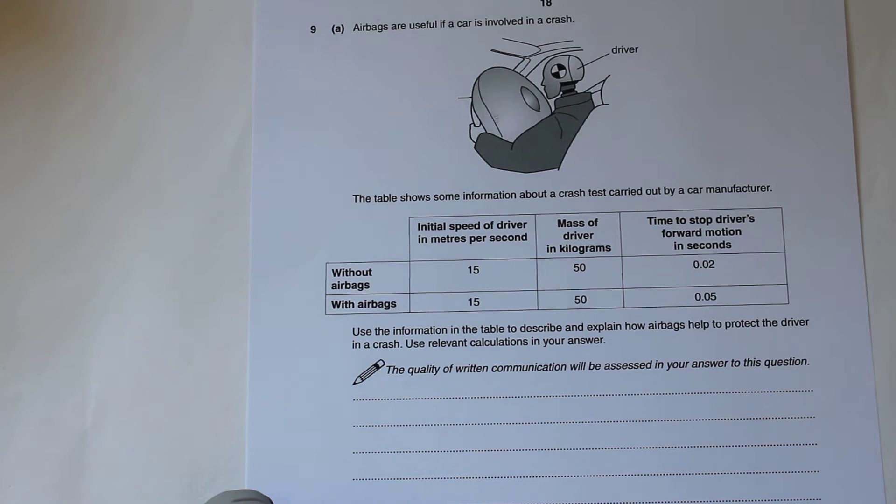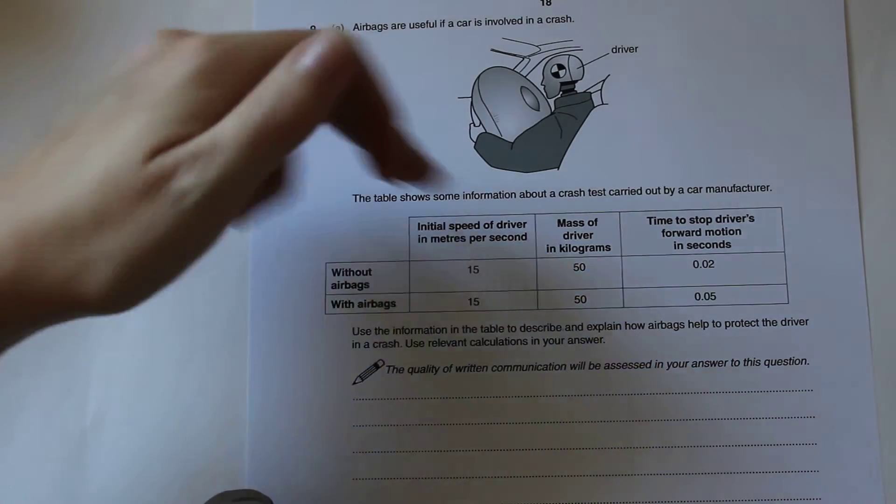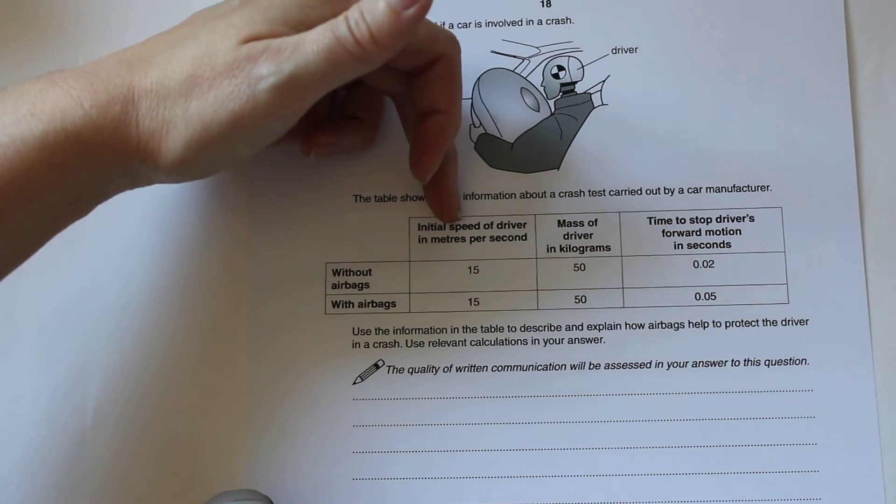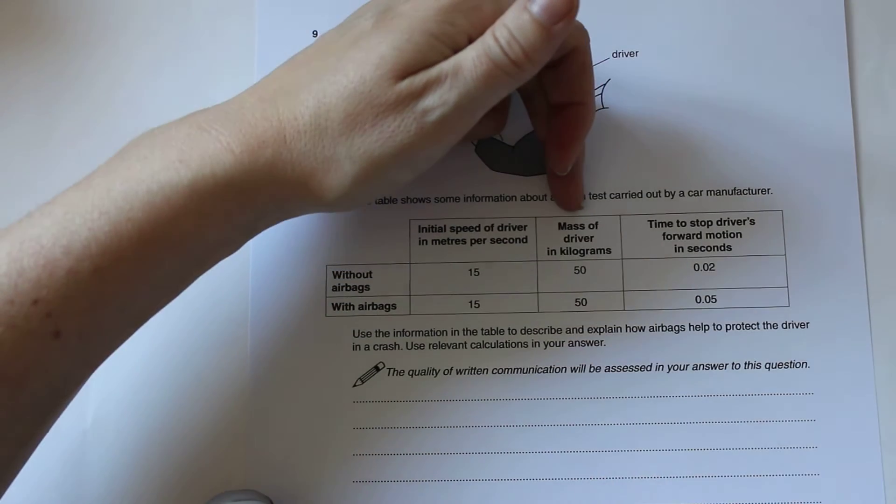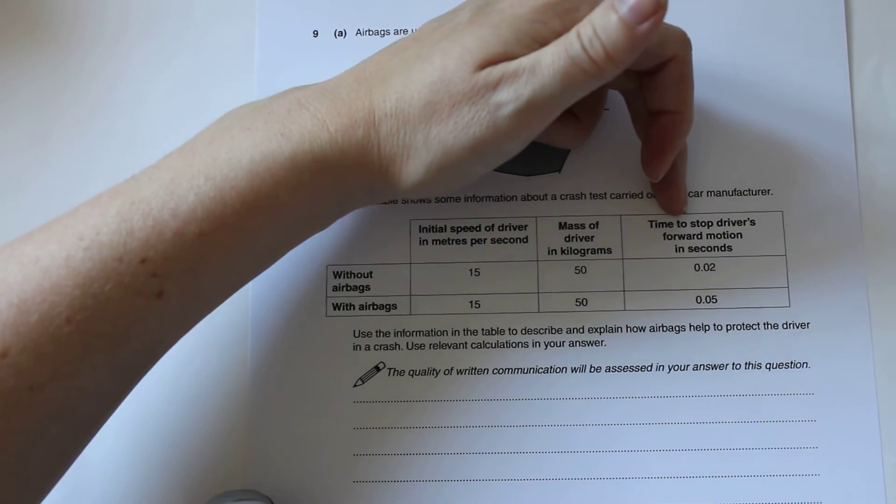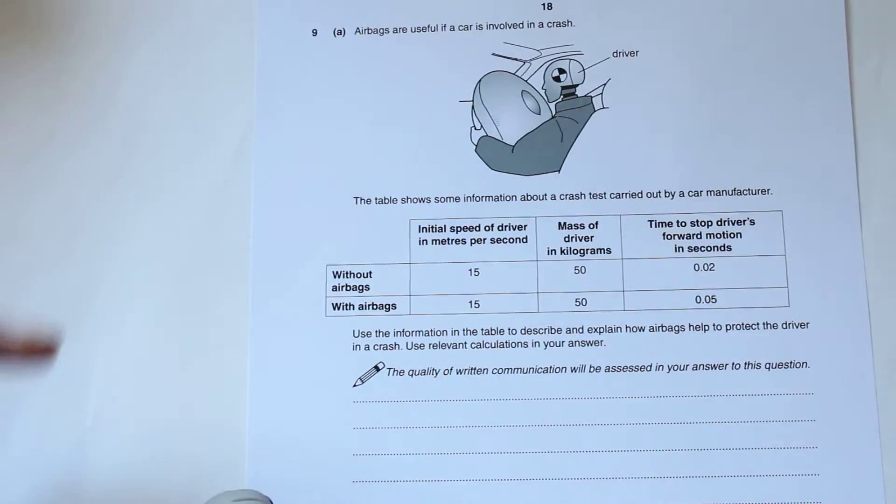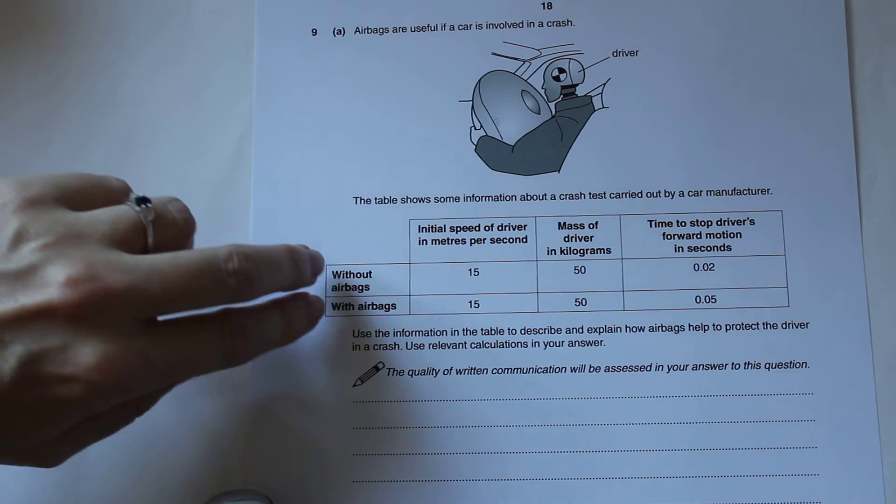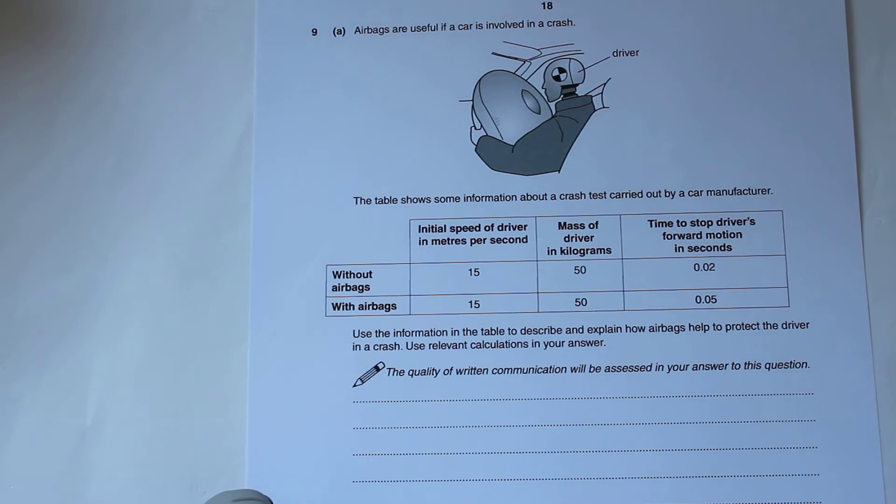The question we've got is airbags are useful if a car is involved in a crash. The table shows some information about a crash test carried out by a car manufacturer. In our table we've got the initial speed of the driver in meters per second, the mass of the driver in kilograms, and the time taken to stop. We have the two different rows without airbags and with airbags.